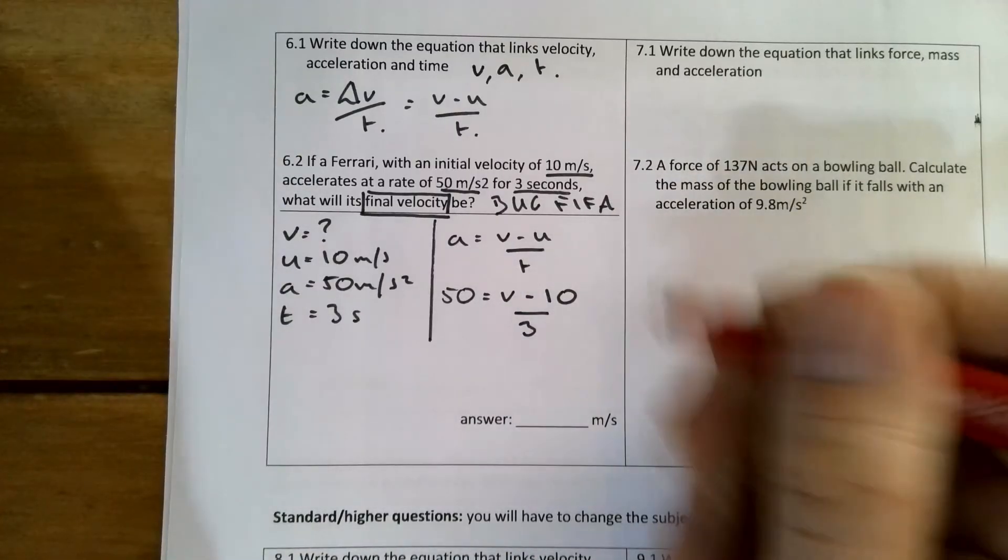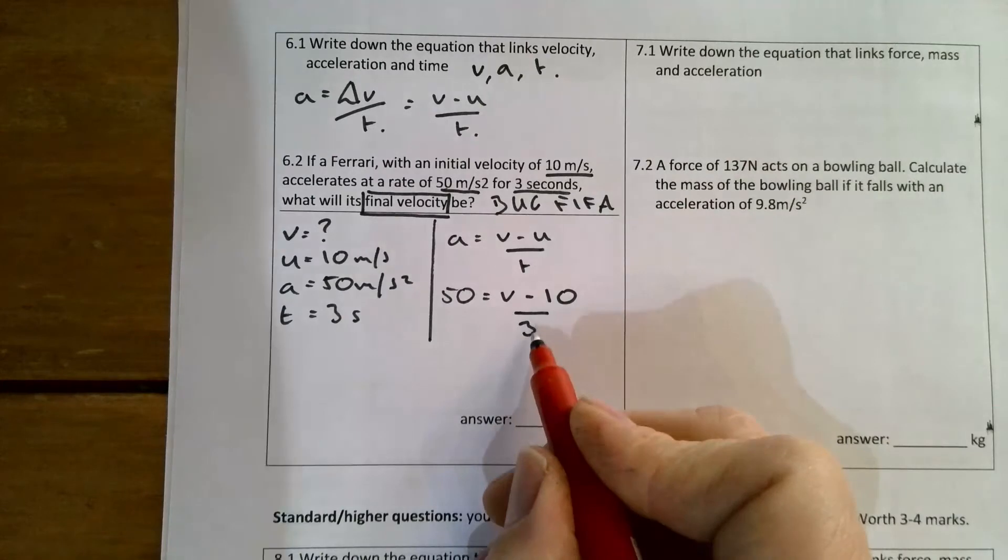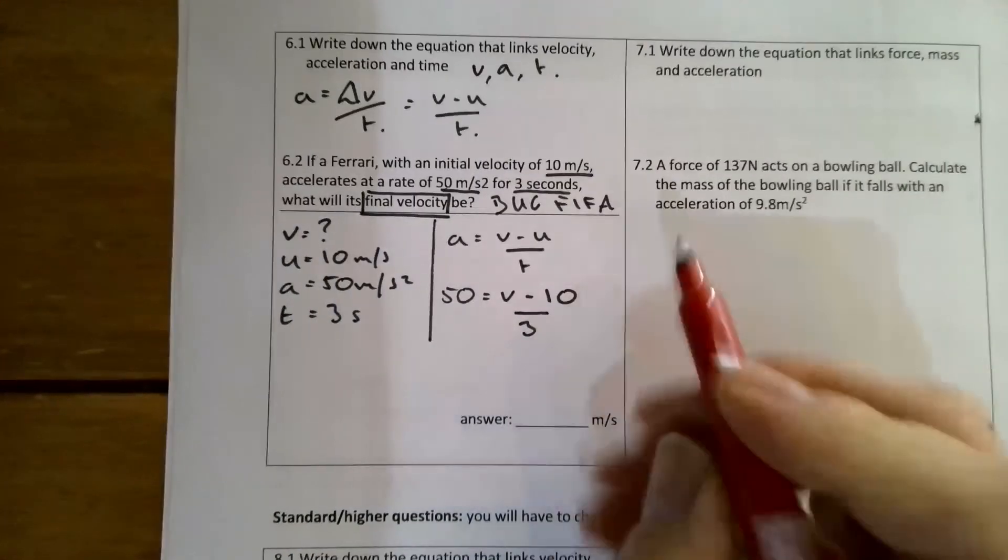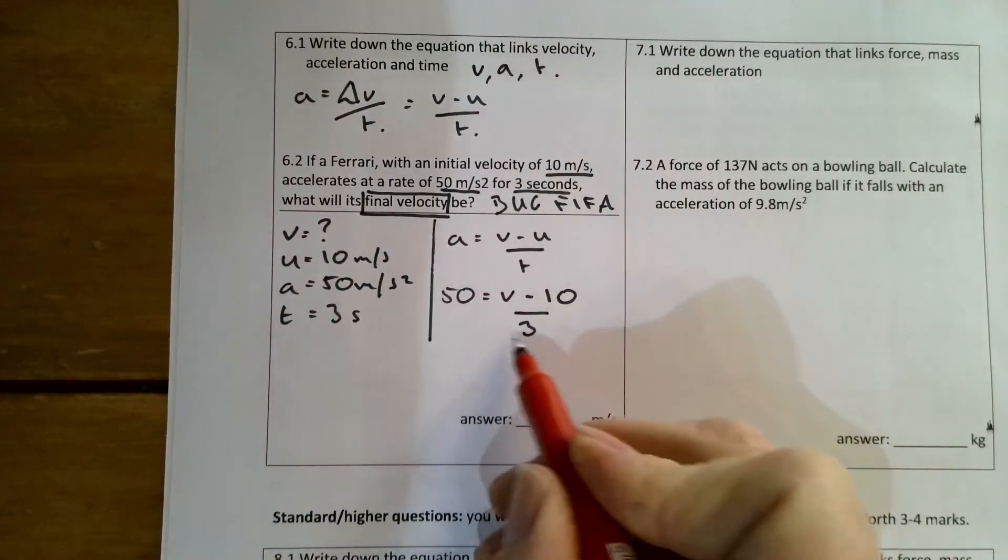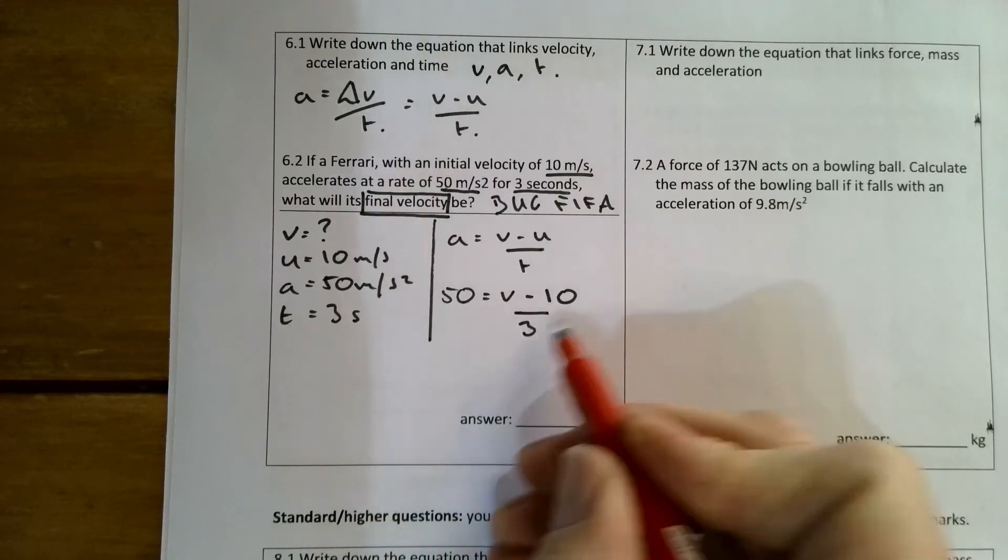I need to rearrange this. In this case, I'm going to get rid of three on this side. So if I multiply both sides by three,